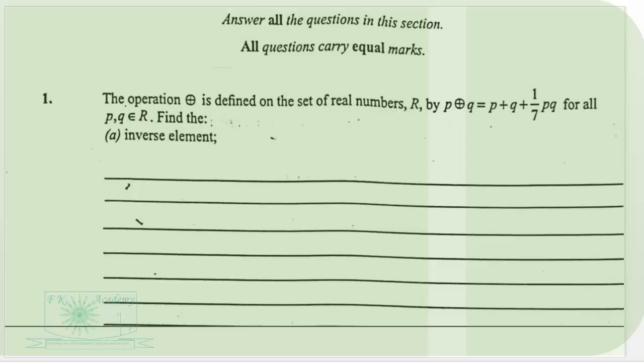A binary operation is defined on a set of real numbers R by P ⊕ Q = P + Q + (1/7)PQ for all P and Q belonging to the real numbers. Find the inverse element.